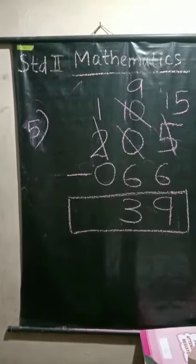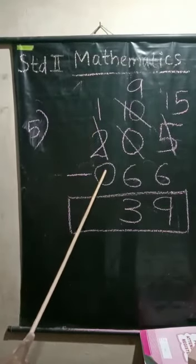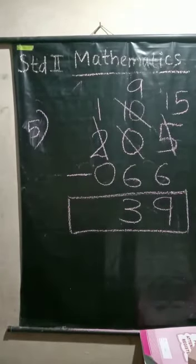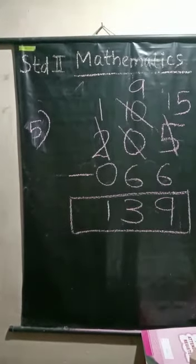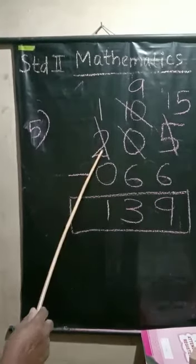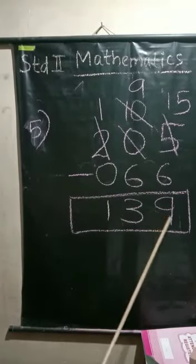Now hundreds place digits: 1 minus 0. One minus zero equals 1. So we can say 205 minus 66 equals 139.